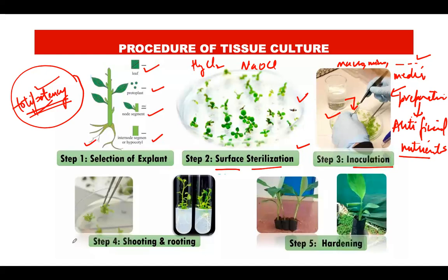After a certain incubation period — which varies from plant to plant — tiny shoots begin to develop from the explant. Subsequently, when the hormonal treatment is changed, rooting starts to take place. Once small shoots and roots have formed, a small plantlet has developed. This plantlet, obtained from a single explant through the tissue culture process, then undergoes the next step: hardening.